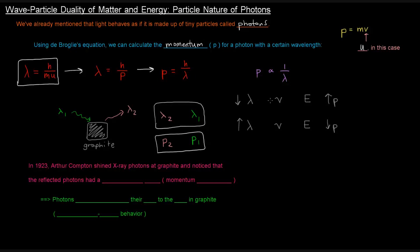I've put frequency (nu) and energy here just for recall. If you have a lower wavelength, you have a higher frequency and higher energy — from the c = λν equation and the E = hν equation. And conversely, a higher wavelength means a lower frequency and lower energy.